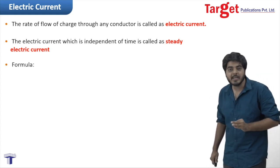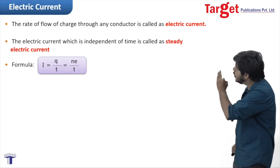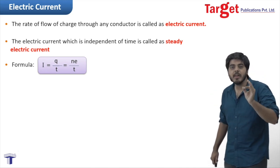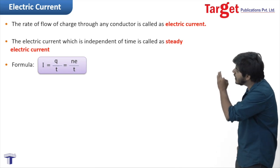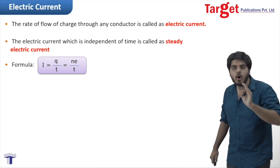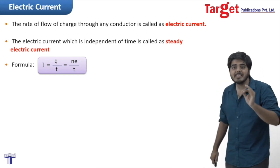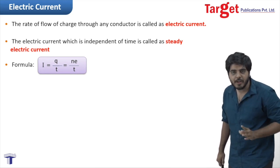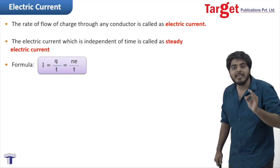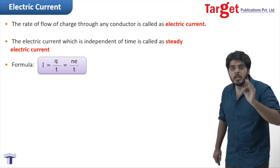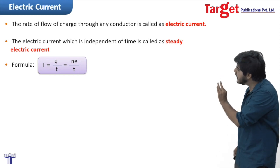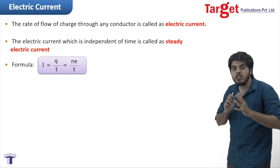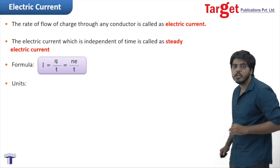The basic formula of electric current is I = Q/T, which is also equal to ne/T. In the first equation, I = Q/T means charge upon time — current is the rate of flow of charge. In the second formula, I = ne/T, where n is the number of electrons, e is the charge on each electron, and T is time.